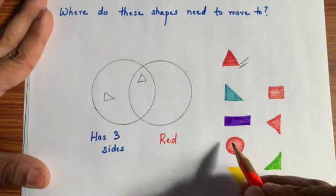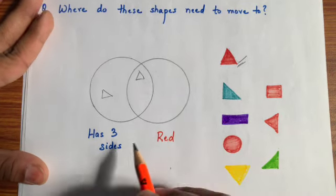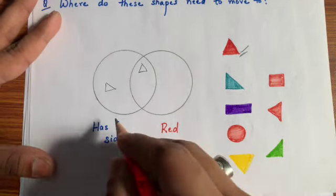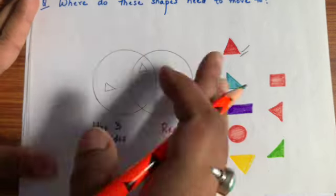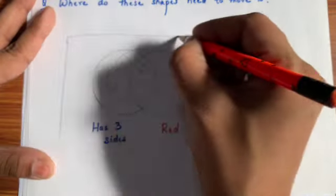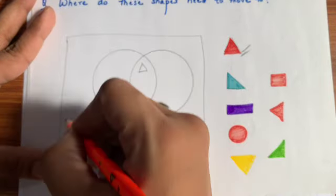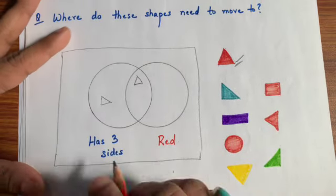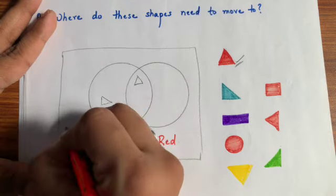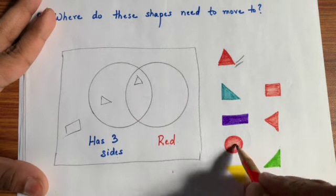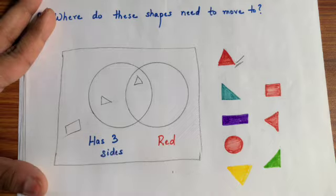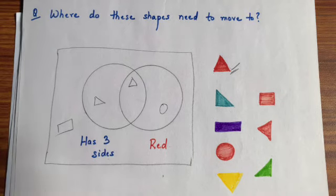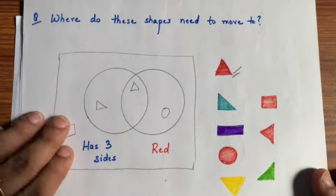Ye kya hai? Ye rectangle hai. Iske four sides hai. So sides ka criteria nahi meet kar raha hai, color ka criteria bhi nahi meet kar raha hai because ye purple hai. To ye kahaan jayega? Ye baahar jayega. Generally Venn diagram jo hoote hai woha is-tarike ke rectangle box me banaayi jate hai. Isko haam universe bolte hai. Right. Poora jo hai voh universe hai. To ye yahaan pe jayega. Circle red, red to hai but iske teen sides nahi hai. To ye kahaan jayega? Yahaan jayega. Aise hi in saare shapes ko humme yahaan rakhna hai.